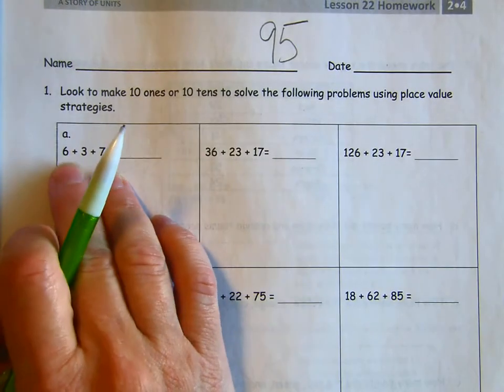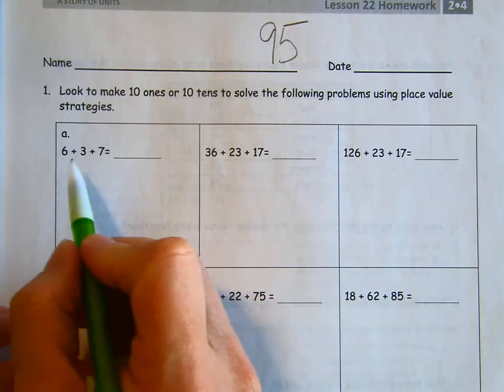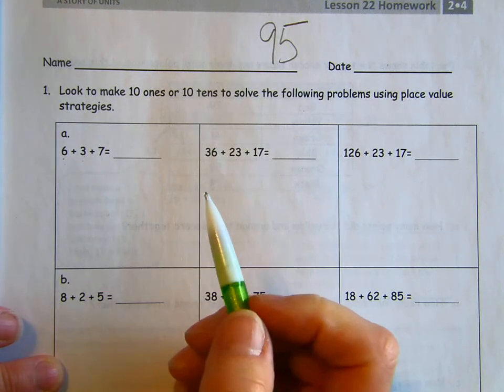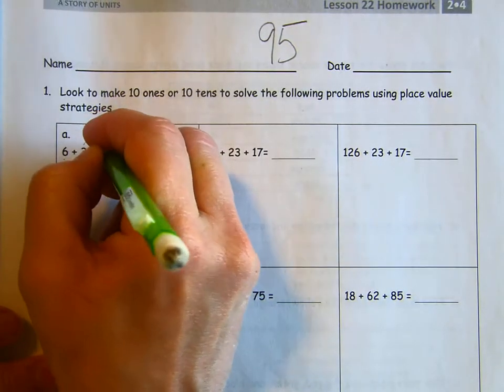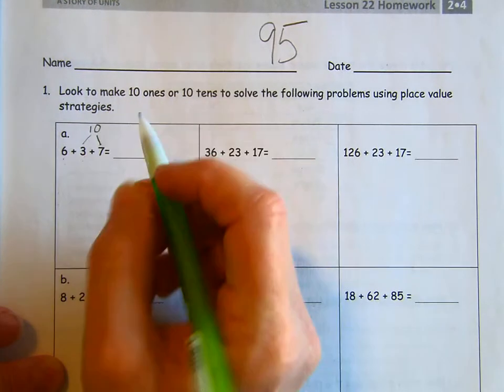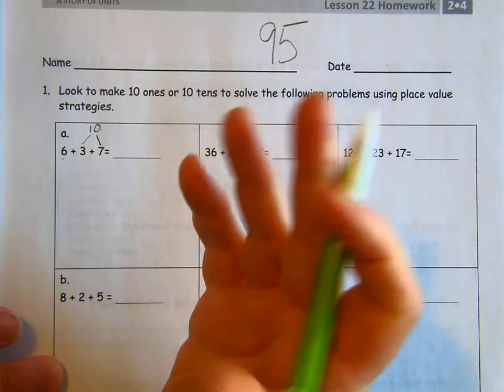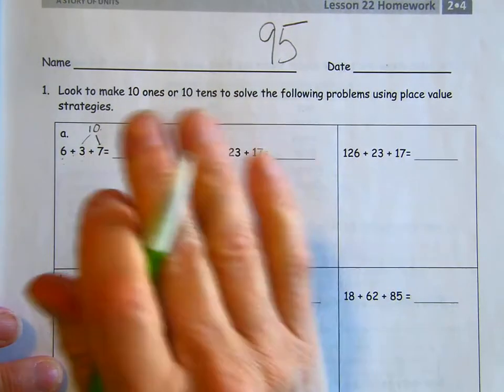So we start off 6 plus 3 plus 7. Can you find a way to make 10? 3 and 7 together make 10. So what we have is 6 plus 10. 10, 6, 16. That's easy.